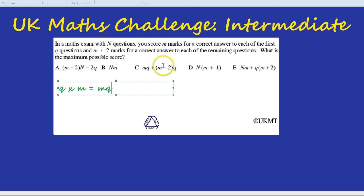What about the remaining questions? Well here's a tricky thing. We don't quite know how many remaining questions there are. All we knew was that the first questions there was Q of them. But there's N questions in total and we've already scored full marks on the first Q of those questions. And that's where we get our MQ from.